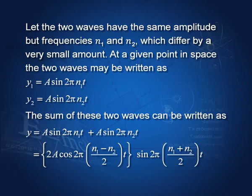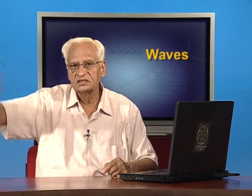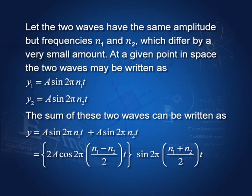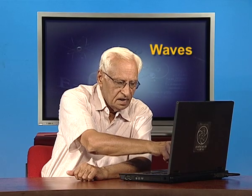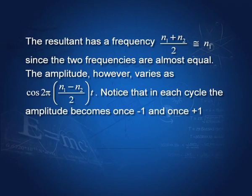Since n1 and n2 are almost equal, the term sin(2π (n1 + n2)/2 · t) is almost equal to either n1 or n2 — this represents the actual vibration at nearly the original frequency. The amplitude of this wave is the slowly varying term 2a cos(2π (n1 − n2)/2 · t), which is a cosine function of time.